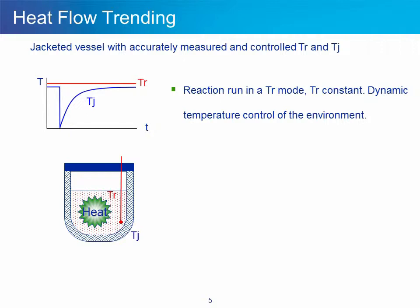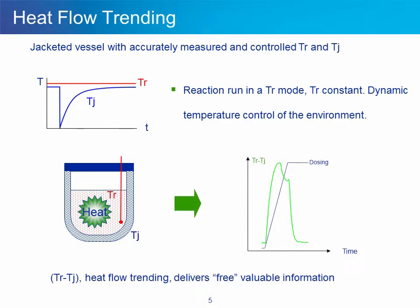It means keeping TR, the reaction temperature, constant along the course of the reaction. When an exothermic reaction occurs, TJ, or jacket temperature, will be automatically decreased to keep TR constant. In other words, instead of keeping TJ constant and monitoring TR variations, TR is kept constant and TJ varies. You can pretty much see the green signal here corresponding to TR minus TJ as a real-time in-situ probe that allows to obtain a terrific amount of information like reaction onset and reaction end, crystallization events, delayed initiation, and reaction dynamics, as we are going to see through a few examples later on during this webinar.